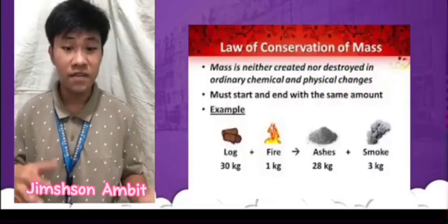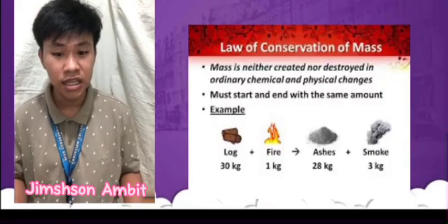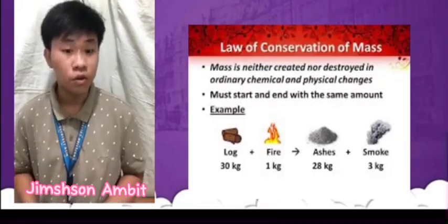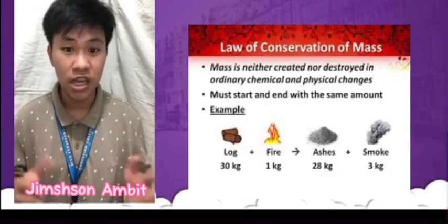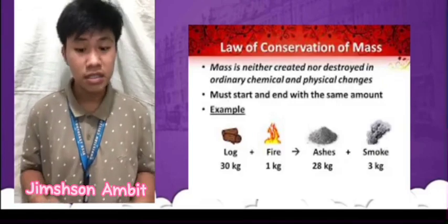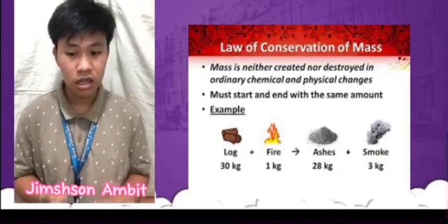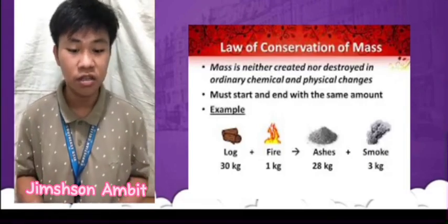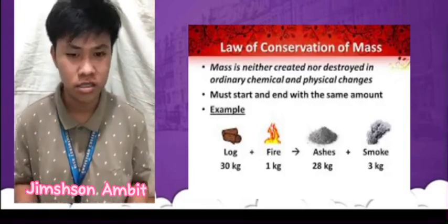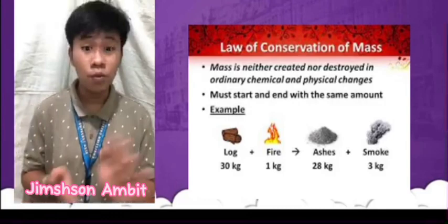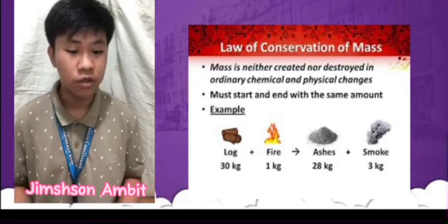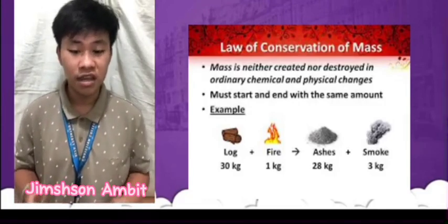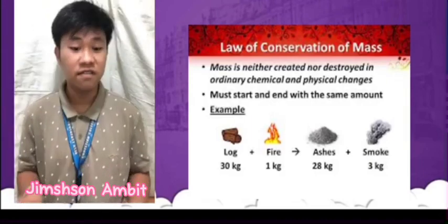The law of conservation of mass states that matter is neither created nor destroyed in a chemical reaction. This means that the total mass of the reactants must be equal to the total mass of the products. In other words, if you start with 100 grams of reactants, you will end up with 100 grams of products.